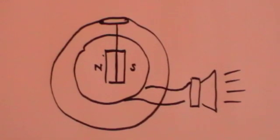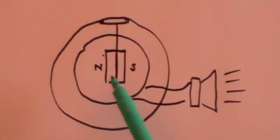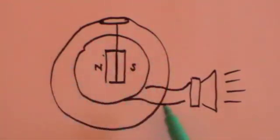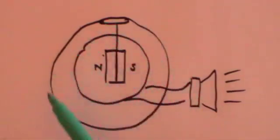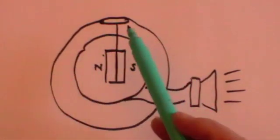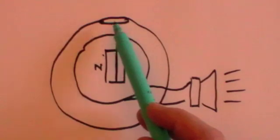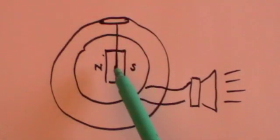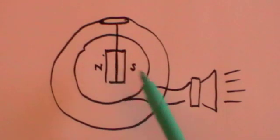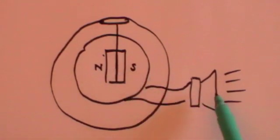The disadvantage of a dynamo, of course, is that unless you have other gadgetry attached to it, when you stop cycling — when your bicycle wheel stops turning, so does the magnet — and if there is no changing magnetic field, there is no current, so the light goes out.